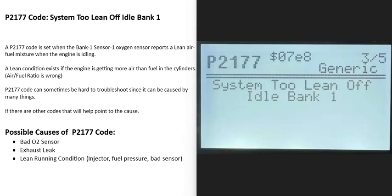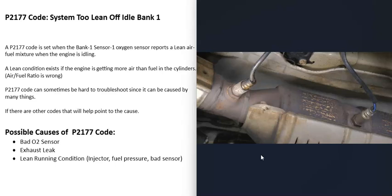Today I'm talking about a P2177 code — what it is and how you could go about fixing it. A P2177 code is 'system too lean off idle bank one.' There are oxygen sensors located in the exhaust, and they do two things: they monitor the catalytic converter, and they monitor how much oxygen was burnt off during combustion. The computer uses that information to adjust the air-fuel ratio mixture going into the cylinders.